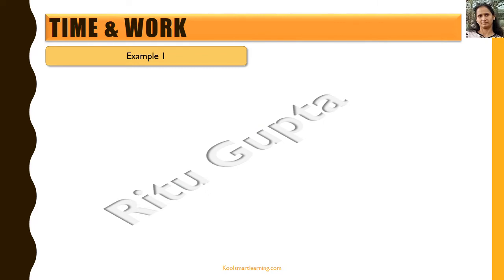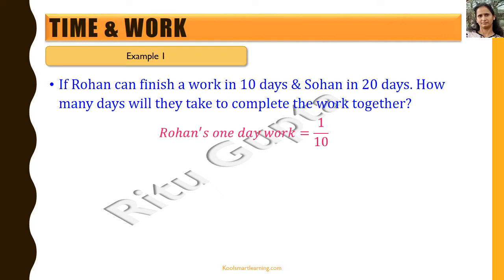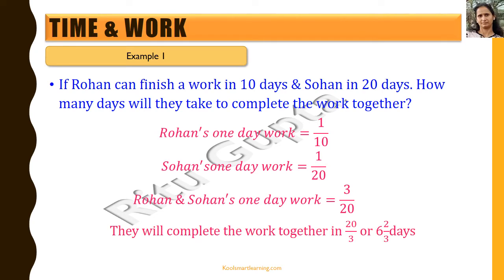Example 1: If Rohan can finish a work in 10 days and Sohan in 20 days, how many days will they take to complete it together? Rohan's 1-day work is 1/10. Sohan's 1-day work is 1/20. Total work done in 1 day = 1/10 + 1/20 = 3/20. Therefore, they will take 20/3 days, which equals 6 and 2/3 days, to complete the work together.